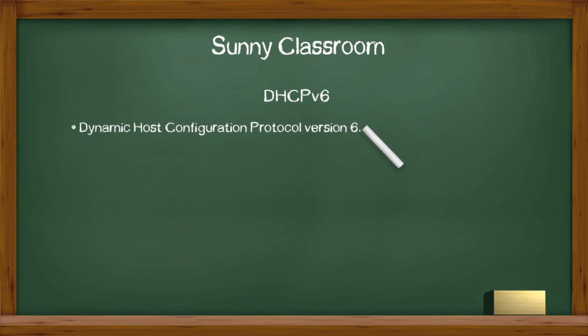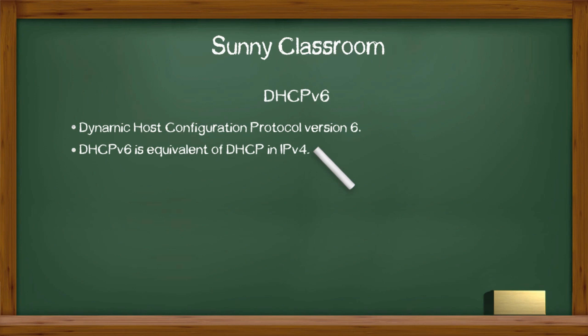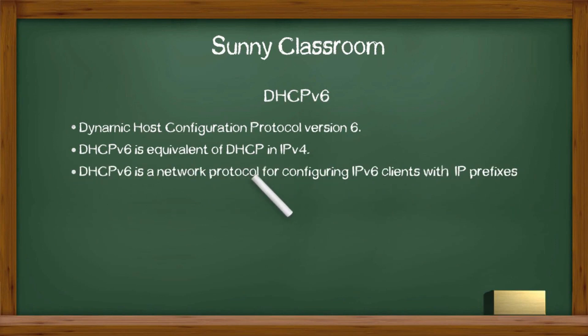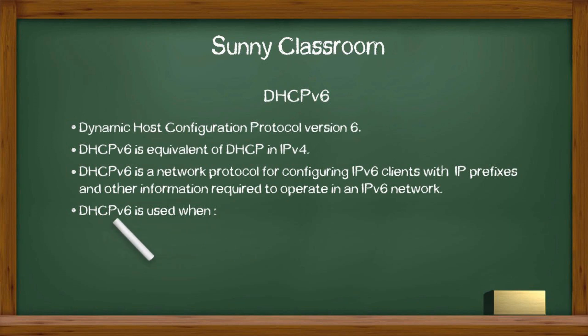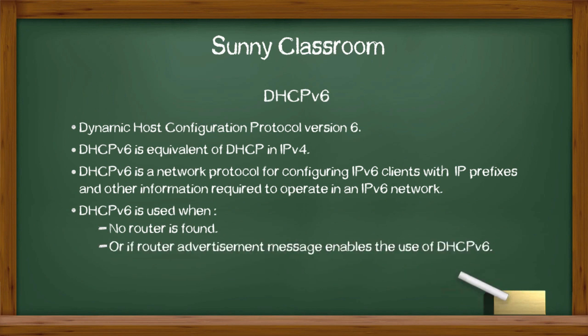DHCPv6 stands for Dynamic Host Configuration Protocol version 6, or Dynamic Host Configuration Protocol for IPv6. DHCPv6 is the equivalent of DHCP in IPv4. It is a network protocol for configuring IPv6 clients with IPv6 prefixes and other information required to operate on an IPv6 network. DHCPv6 is used when no router is found, or if a router advertisement message enables the use of DHCPv6.